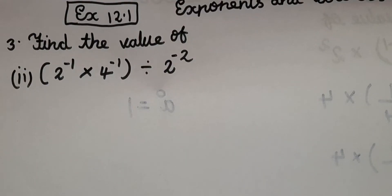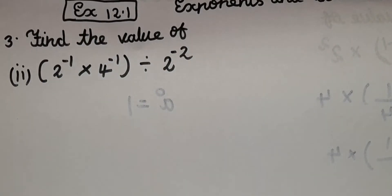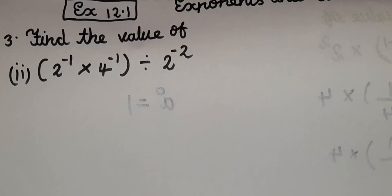So guys, let's read the question. Find the value of 2 power minus 1 into 4 power minus 1 is divided by 2 power minus 2. In this question, you can see all the powers are in subtraction symbol.